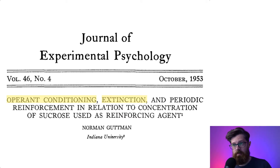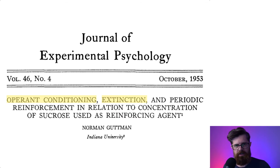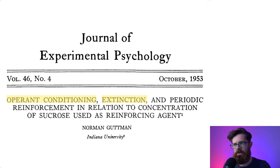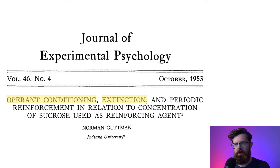First we can think about classical conditioning, where a kind of inbuilt physiological response is trained. One of the classic examples here is Pavlov and his salivating dogs — salivation is a low-level inbuilt response. What we're talking about here though is operant conditioning, which refers to more complex behavior. In this particular study we're talking about rats pressing a bar, learning to associate pressing the bar with getting a sucrose reward.